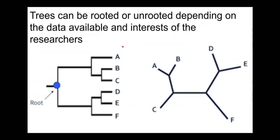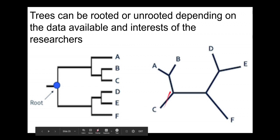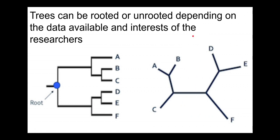Trees can be rooted or unrooted depending on the goals and interests. These two trees shown — with tips A, B, C, D, E, F — are actually the exact same tree. The clade of A, B, C on one matches the same clade on the other; the clade of D, E, F matches as well. They have the same relative order and same clade structure. One simply has a root indicating where the common ancestor of all the tips is.